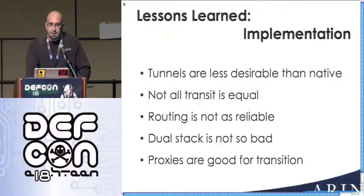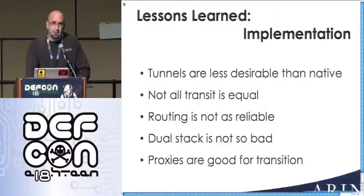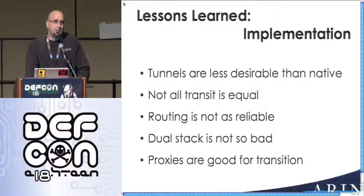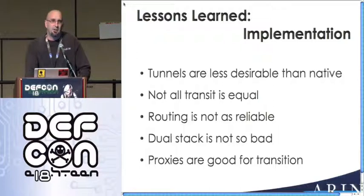So what did we learn at ARIN when implementing this? We learned a whole lot. Tunnels are less desirable than native — really just due to MTU. There are workarounds: on the Sprint circuit we originally set our web servers to an MTU of 1280, which is the minimum MTU size in V6, so path MTU discovery problems just go away. But then you're sending all these little packets around — not very efficient.